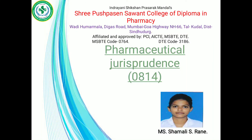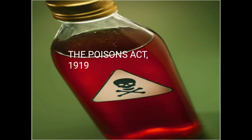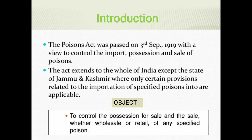Let's begin with the new topic of pharmaceutical jurisprudence, i.e., the Poison Act 1990. The Poison Act 1990 was an act to consider and amend the law regarding or regulating the import, possession and sale of the poison. The Poison Act was passed on 3 September 1990 with a view to control the import, possession and sale of the poison.